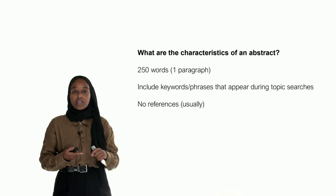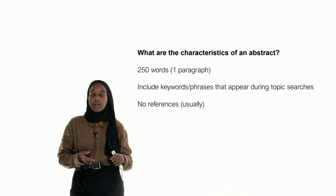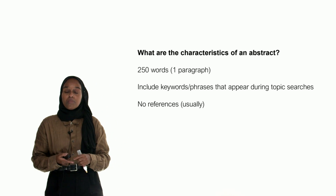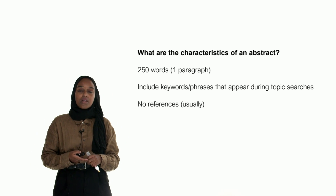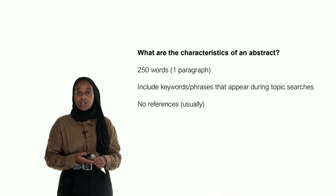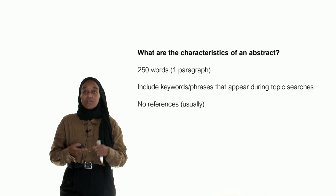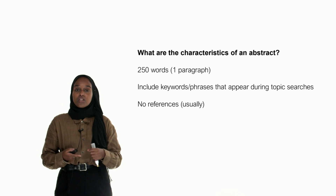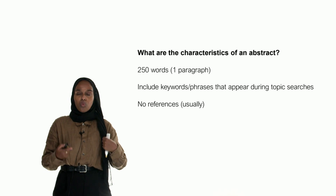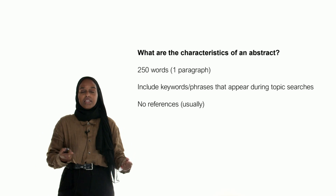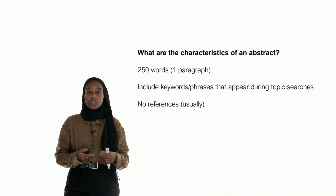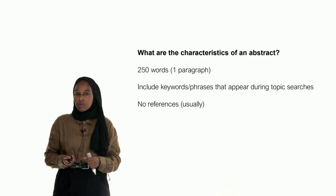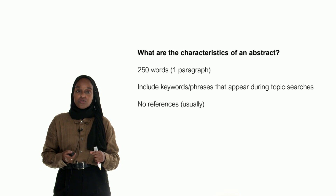Try to include keywords or phrases that appear in topic searches. When you search for papers on Mendeley, Google Scholar, or PubMed, those search bars allow you to search through keywords. Think about the five or ten keywords that are most important to your work and content, and try to include them as much as you can within the abstract.